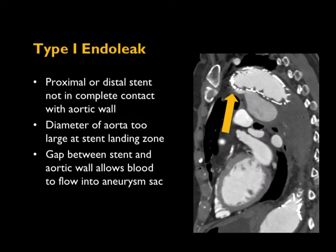Type 1 endoleak is caused by an incomplete seal of either the proximal or distal end of the stent. The stent struts are supposed to press up against the aortic wall to get a nice seal. If they don't — because the stent is too small, poorly sized, or because of the tortuosity of the aorta — you can get a type 1 endoleak. Sometimes putting a straight stent in a curvy aorta means you don't get a good seal against part of the wall.